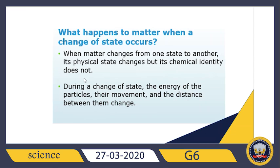During a change of state, the particles should either gain or lose a certain amount of energy. Because of this added or lost energy, the movement of the particles will change — they will either move more freely or become fixed in their position. The distance between the particles will also change: if particles gain energy, the distance increases; if they lose energy, the distance decreases.